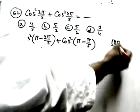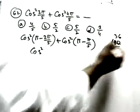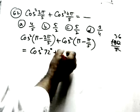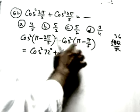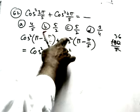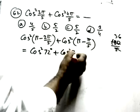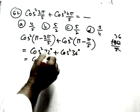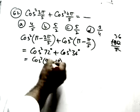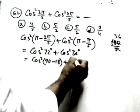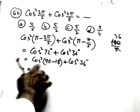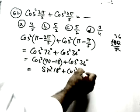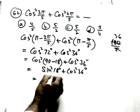So we have cos²72° + cos²36°. Now 72° = 90°−18°, so cos 72° = sin 18°. This gives sin²18° + cos²36°.